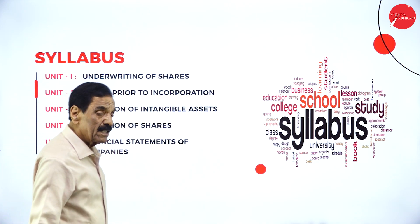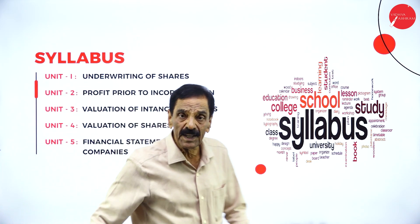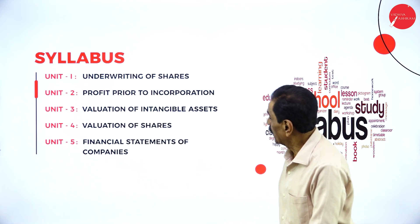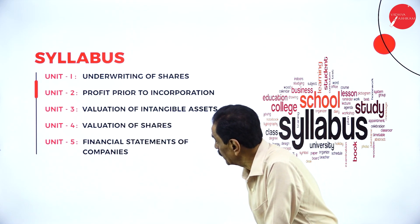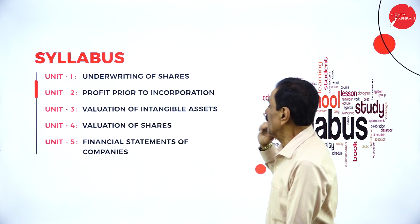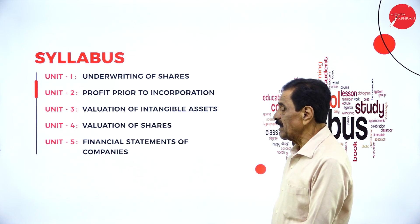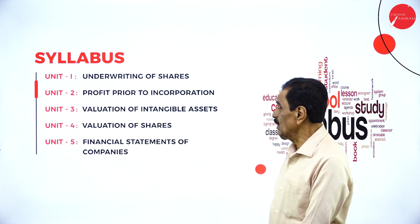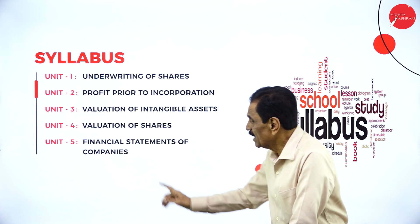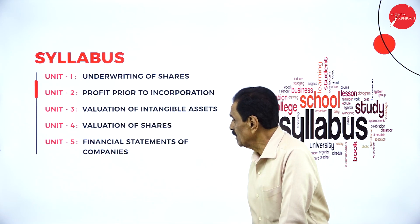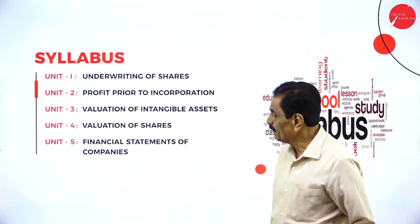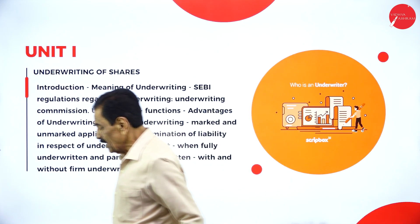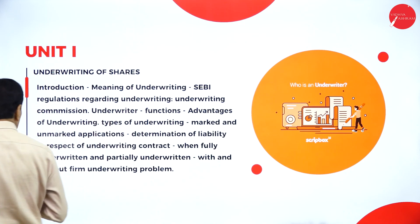To recap the five units: Unit 1 — Underwriting of Shares; Unit 2 — Profit Prior to Incorporation; Unit 3 — Valuation of Intangible Assets; Unit 4 — Valuation of Share; Unit 5 — Financial Statement of Companies. We will go through them one by one.